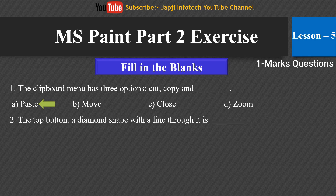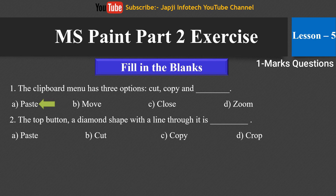The second fill in the blank is: the top button, a diamond shape with a line through it, is ___. The options are paste, cut, copy and crop. The right answer is: the top button, a diamond shape with a line through it, is called crop.